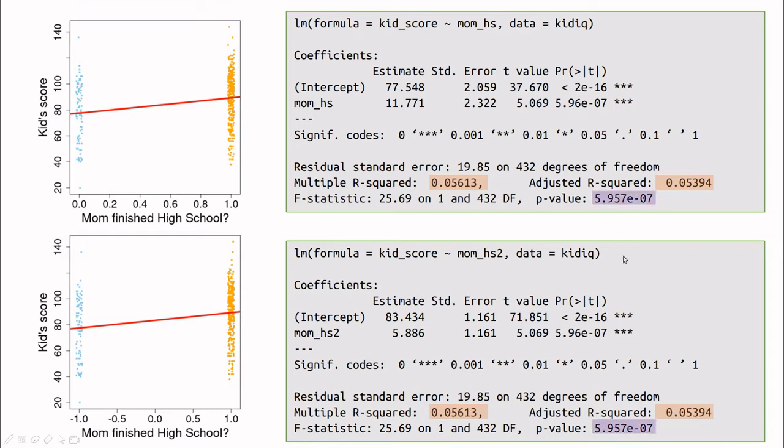Also, the significance of the fit is the same. So there are the same numbers all over the place. So this is like a change of units. Instead of playing with zeros and ones, we're scaling the variable between minus 1 and 1. But this, of course, is not changing the regression.